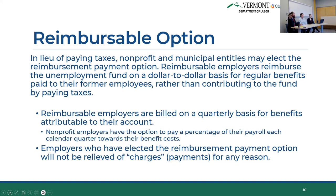When the quarterly UI contribution report comes around, we'll send you a bill for the quarterly benefits paid out during that past quarter. As a reimbursable employer, you also have the option of paying us quarterly in anticipation of charges. If you think you usually lay someone off at a particular time — say wintertime — you can pay us throughout the year to account for those charges, and we would true that up at the end of the year, either reimbursing you if you've paid too much or sending a bill at year end.